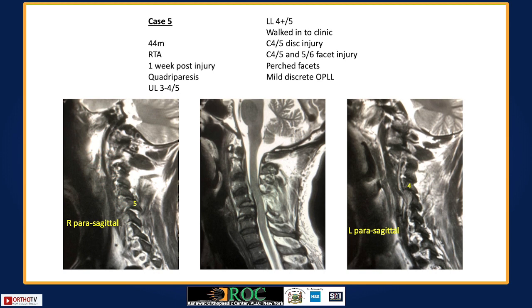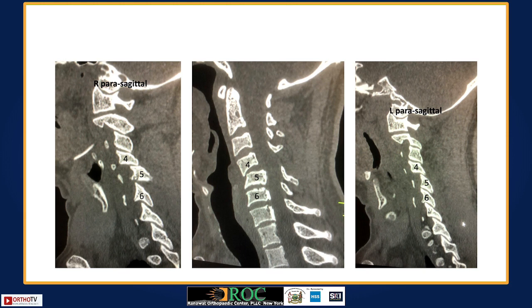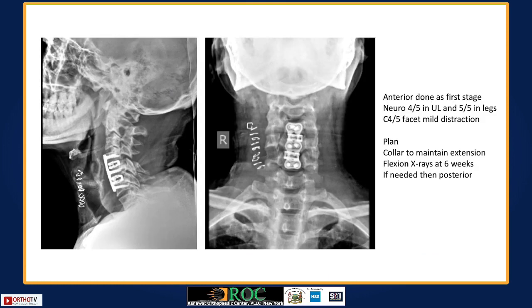Another trauma case with quadriparesis: the patient presented a week post-injury and walked into the clinic despite the injury. He had posterior injury and facet joint injuries. CT scans showed perched facets at C4-5 and C5-6 on the left. Initial management was a two-level ACDF; the patient was mobilized with a collar. The C4-5 level is slightly distracted, so a watch-and-wait approach is taken, proceeding with posterior surgery only if obvious instability is seen at six weeks.